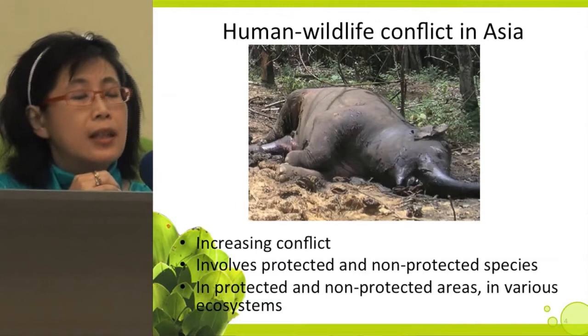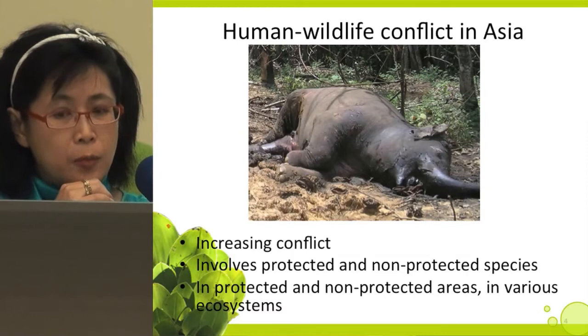About human-wildlife conflict in Asia, there has been increasing conflict. It involves protected and non-protected species and also happens in protected and non-protected areas in various ecosystems. Because of the limited time, I'm going to give three examples: tigers, elephants, and the orangutan. The map shows the previous area occupied by tigers, which has been declining.